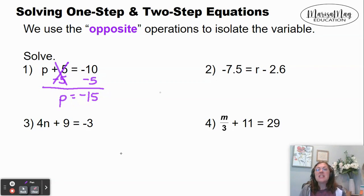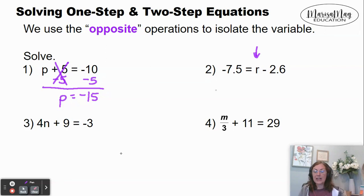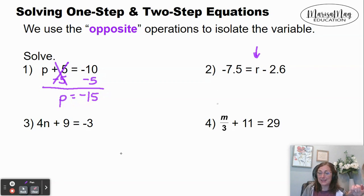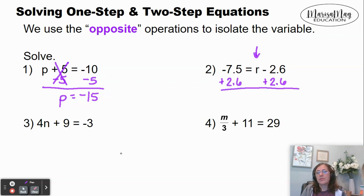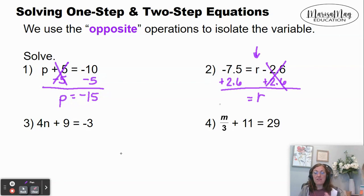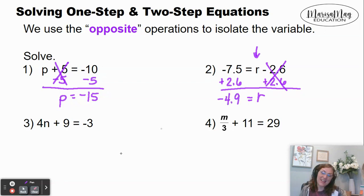So look at problem number two here: negative 7.5 equals r minus 2.6. If you need to put a little note to yourself where that variable is, so you can focus your eye — ask yourself what's happening to the variable. It's being subtracted by 2.6. What is the opposite of subtracting 2.6? It's to add 2.6. So we're going to add 2.6 to both sides. When you do the opposite, it cancels out and we're left with the variable r. Negative 7.5 plus 2.6 gives me negative 4.9, and that's my solution.